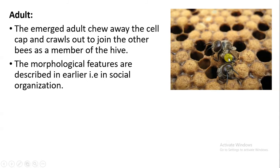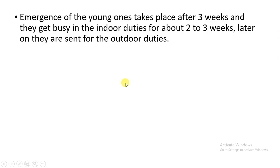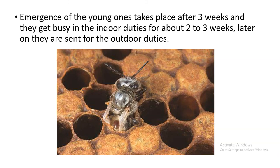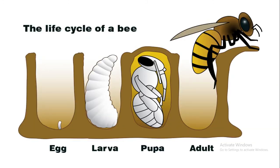In the adult stage, the bee chews the capping of the cell, emerges out, crawls out, and joins the other bees as a member of the hive. For about three weeks after emergence, the adult is busy with indoor duties. After about two to three more weeks, they are sent for outdoor duties. This is how the adult stage is seen in the life cycle of the honeybee.